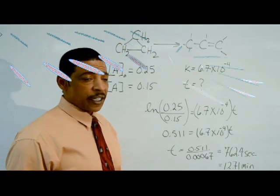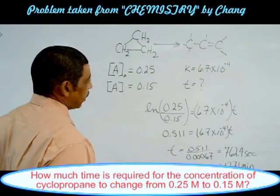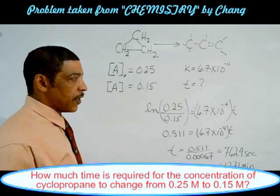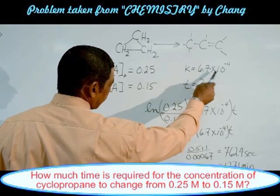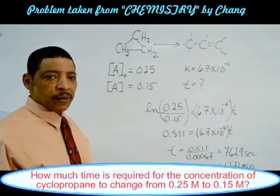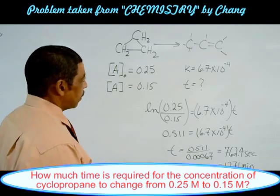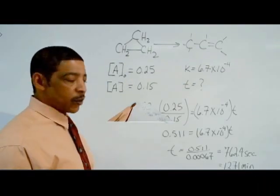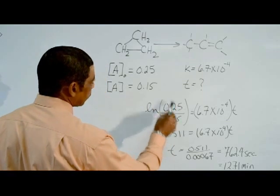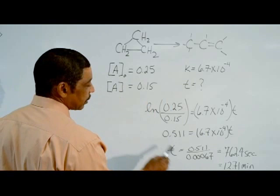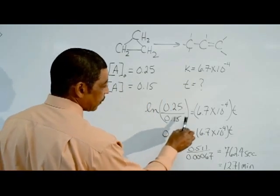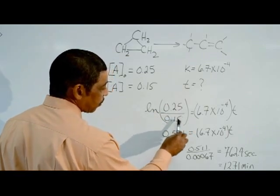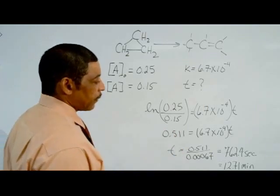Now let's perform another example by changing the conditions. The initial concentration of cyclopropane is still 0.25 molar, and the final concentration is given as 0.15 molar. The rate constant remains the same, 6.7 × 10⁻⁴ s⁻¹, but now we're looking for T — in other words, how long would it take for the concentration of cyclopropane to change from 0.25 molar to 0.15 molar? From the original equation, the natural log of 0.25 divided by 0.15 is equal to KT, and solving the left side gives 0.511, which equals KT.